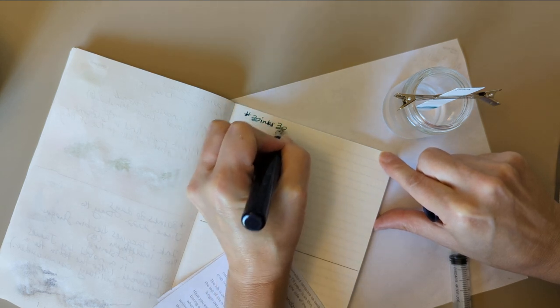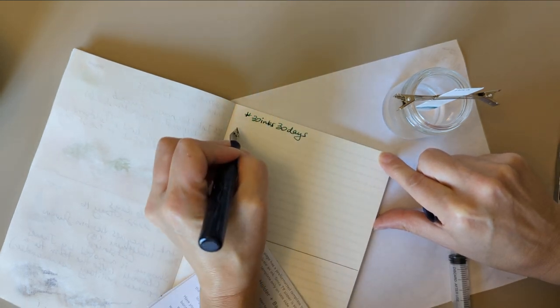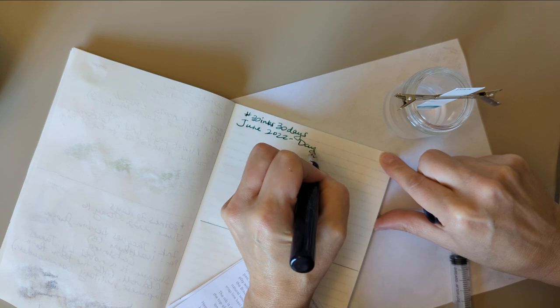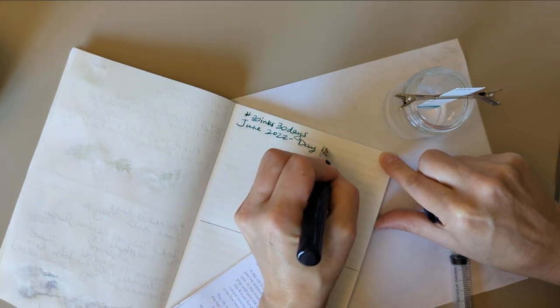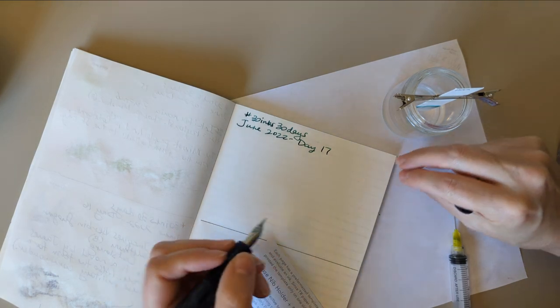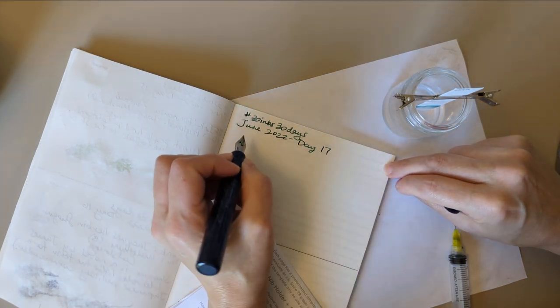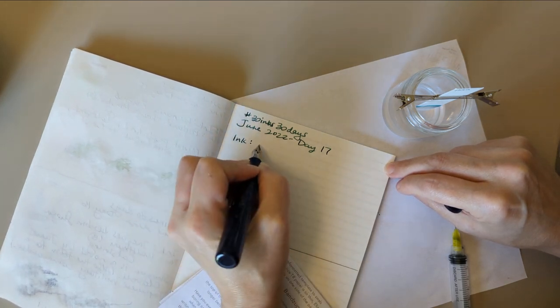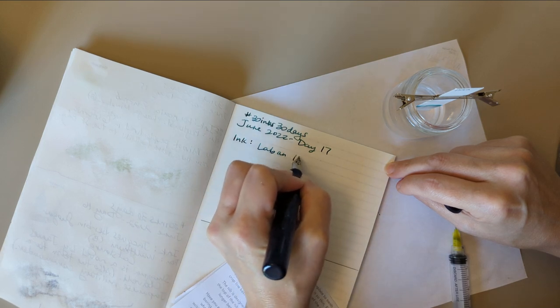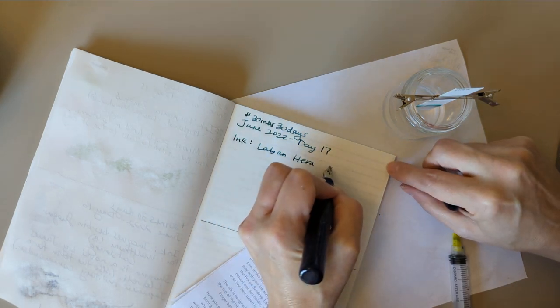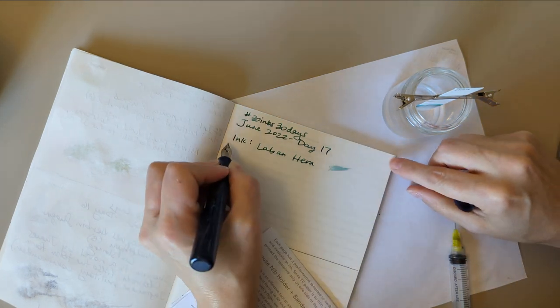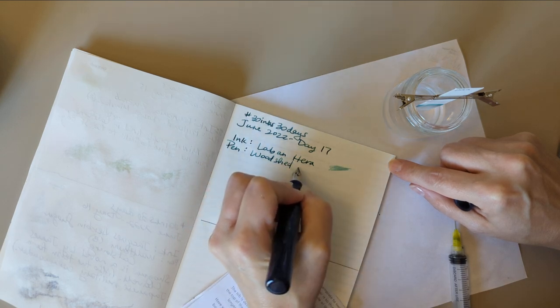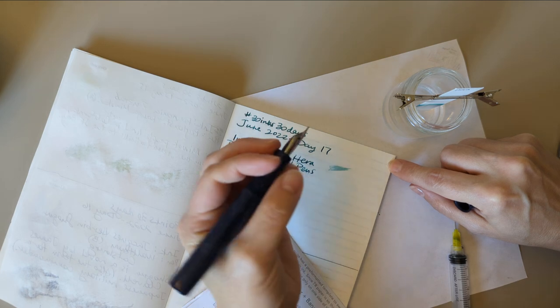30 inks 30 days, June 2022, day oh gosh what is today even, 17, day 17. Happy birthday to my brother Matt. Did I say 17 when we started the video? Who cares, we're past that point now, that was so long ago. Laban Hera, pen woodshed pens. This is called mermaid's tears, or mermaid tears. I kept getting it wrong when I was even doing the video for it, we can't be counting on me.